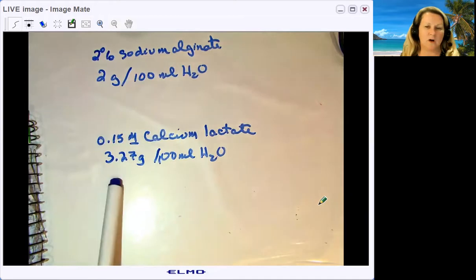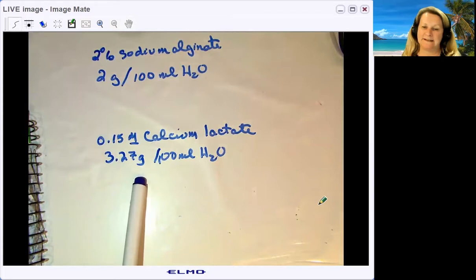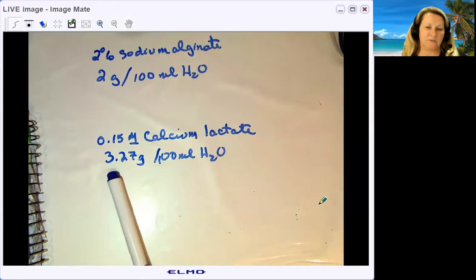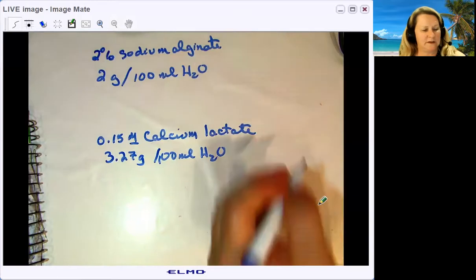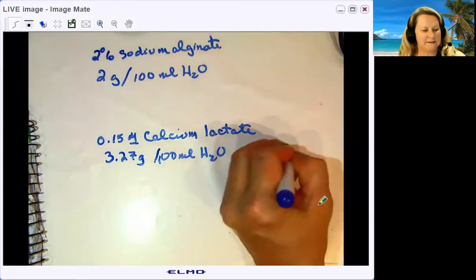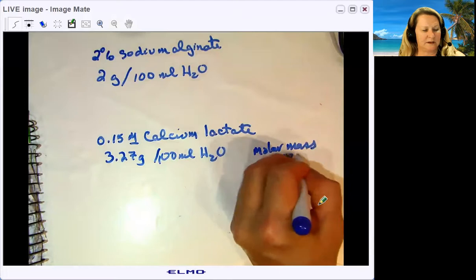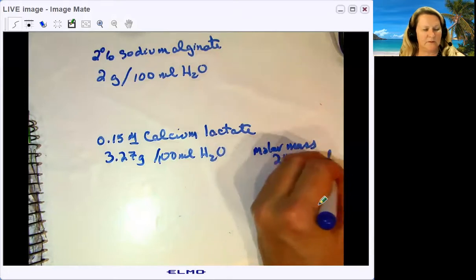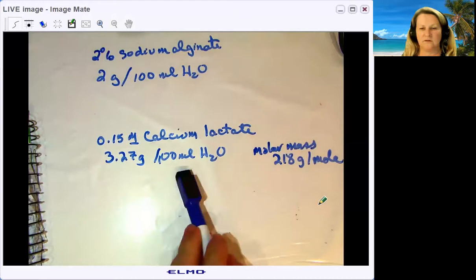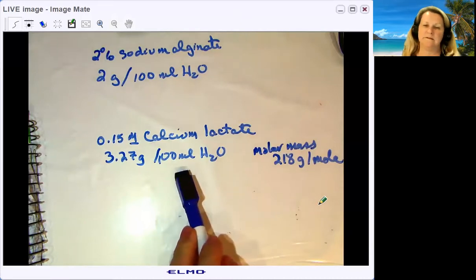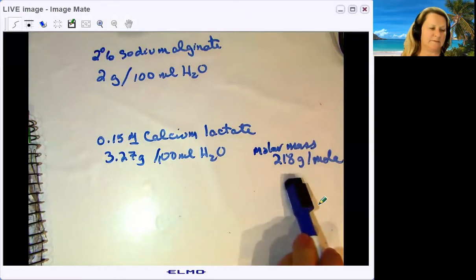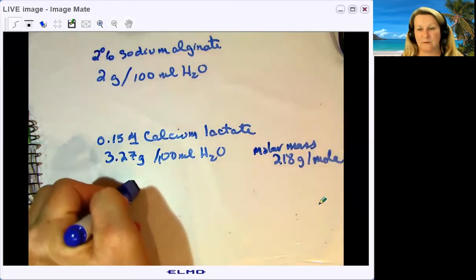You also need a 0.15 molar calcium lactate solution. I'm making 100 mL today, which is 3.27 grams per 100 mL. How did I figure that out? The molar mass of calcium lactate is about 218 grams per mole. If you do the math to make 100 mL (0.1 liters) of a 0.15 molar solution with molar mass 218 grams per mole, it works out to about 3.27 grams.